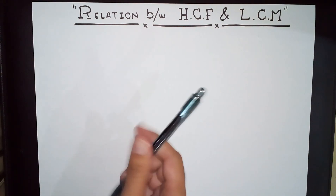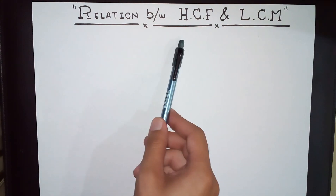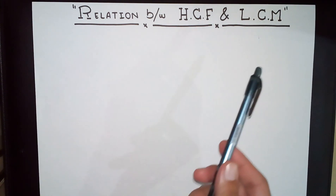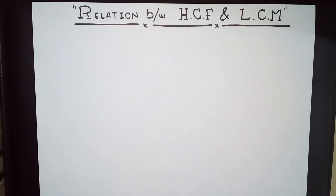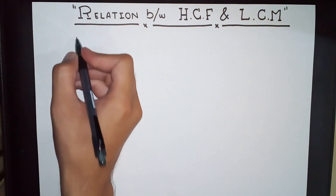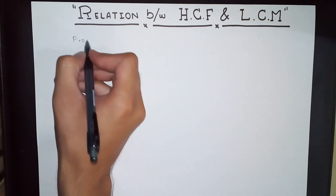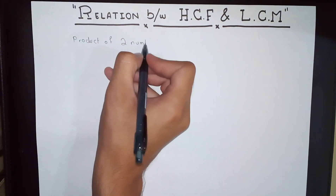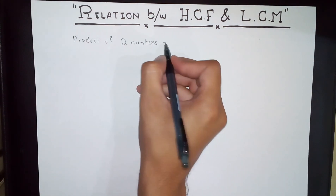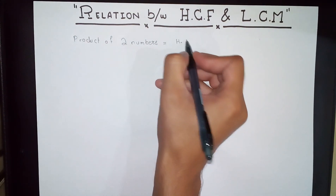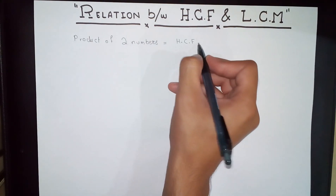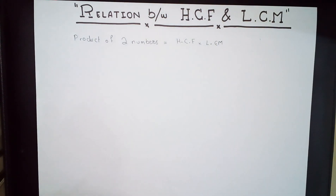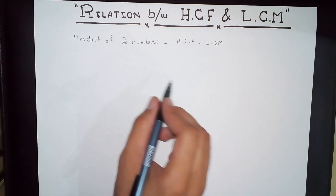Now, if you know about the HCF of two numbers and the LCM of the same two numbers, is there anything new that comes out of it? Yes, there is. The product of two numbers is equal to the HCF — highest common factor — times the LCM, which is the lowest common multiple.